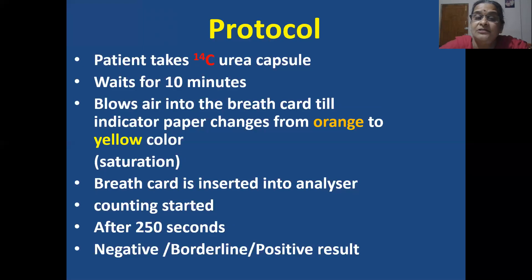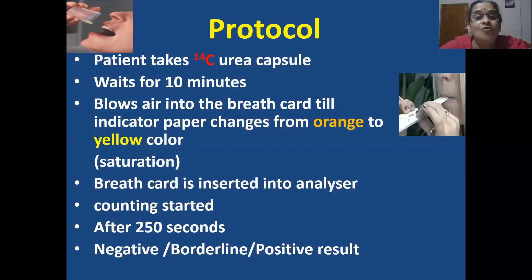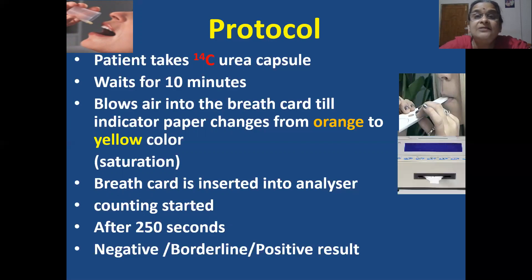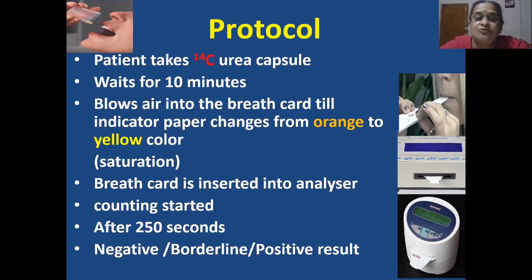The protocol: the patient takes a 14 carbon urea capsule, waits for 10 minutes, and blows air into the breath card until the indicator paper changes from orange to yellow to show saturation of the air — like a pH paper indicator. The breath card is then inserted into the analyzer and counting is started. After 250 seconds, a negative, borderline, or positive result can be detected.